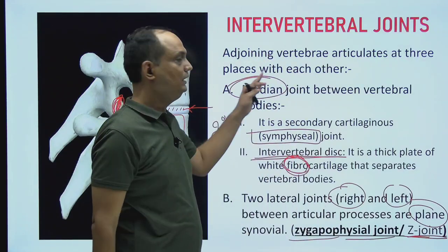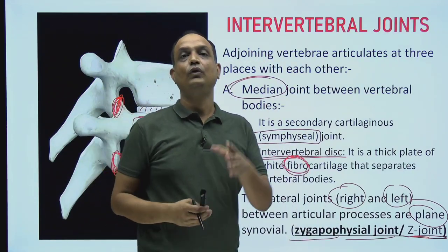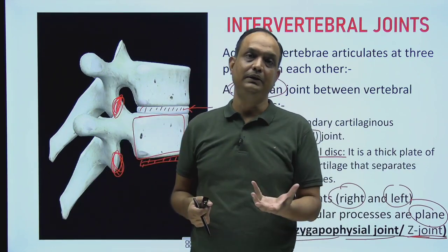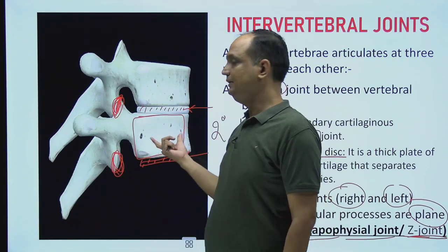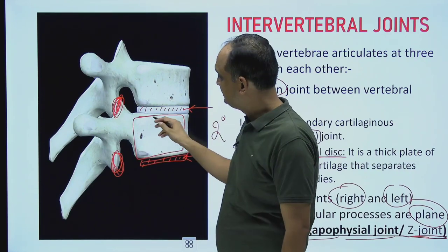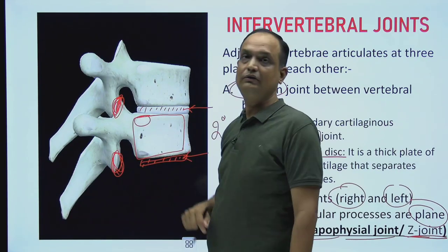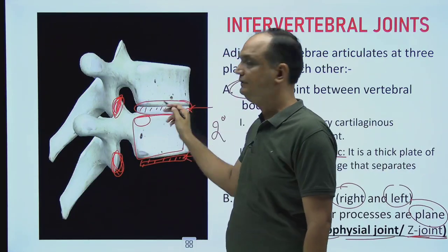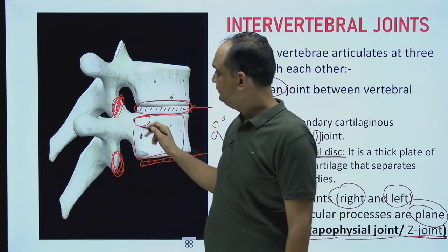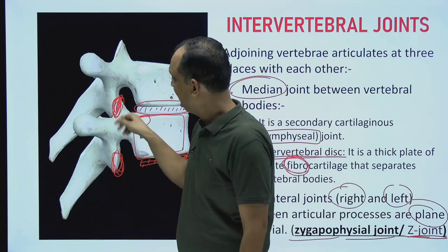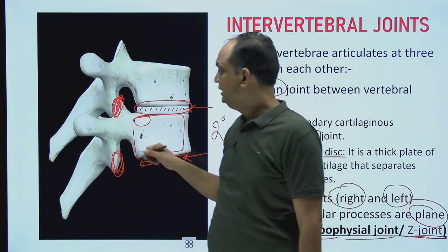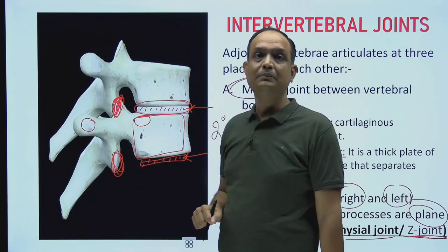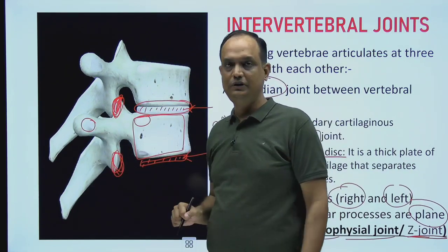To summarize joint types for a thoracic vertebra: it makes a plain synovial joint with the head of the rib (costovertebral), a secondary cartilaginous joint with the adjacent vertebral body (intervertebral disc), a plain synovial joint with the adjacent articular process (zygapophysial), and a plain synovial joint at the transverse process with the rib tubercle (costotransverse).